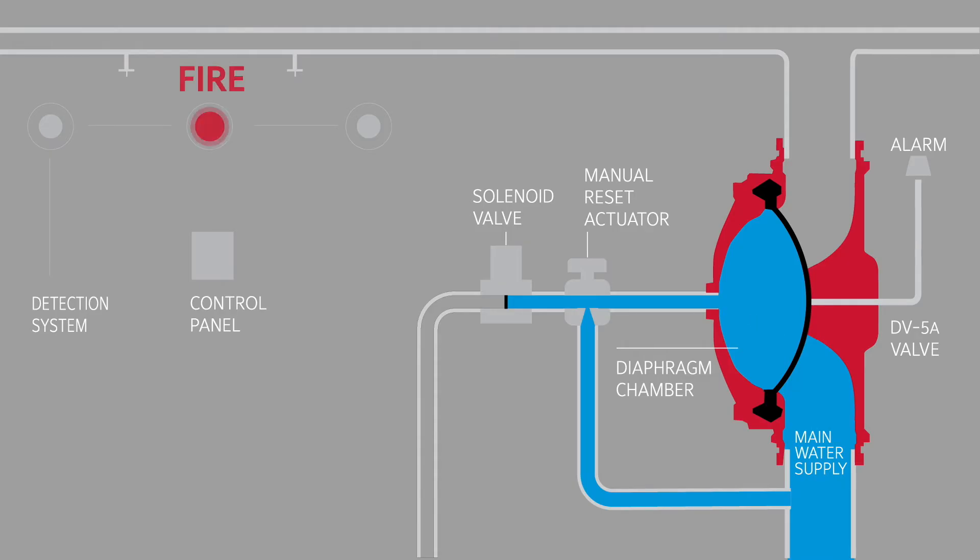When a fire sets off a heat or smoke detector, the detector sends a signal to the control panel. The control panel opens the solenoid valve, releasing water from the diaphragm chamber, allowing the higher pressure from the water supply to push the diaphragm open and flow through the system.